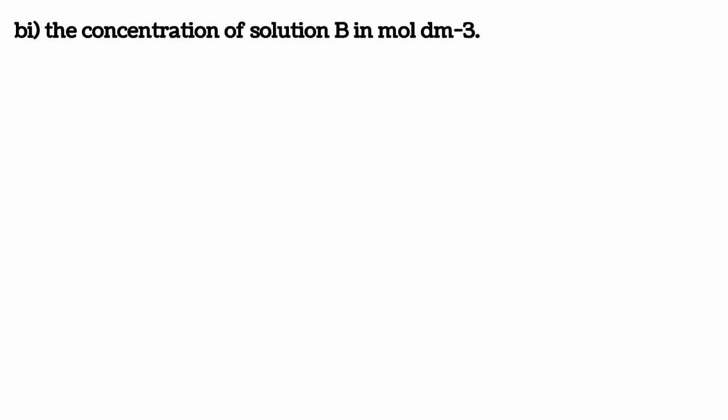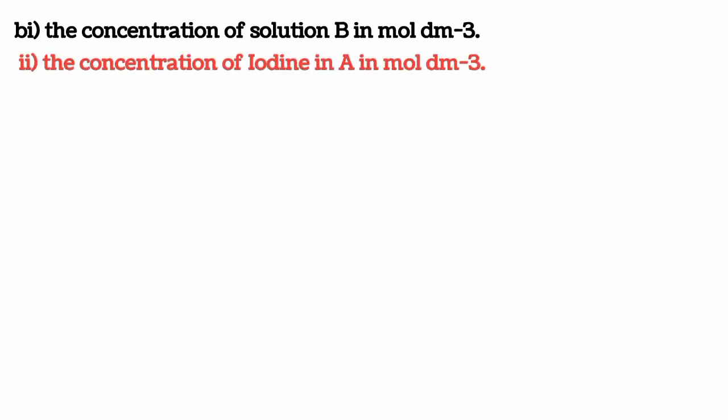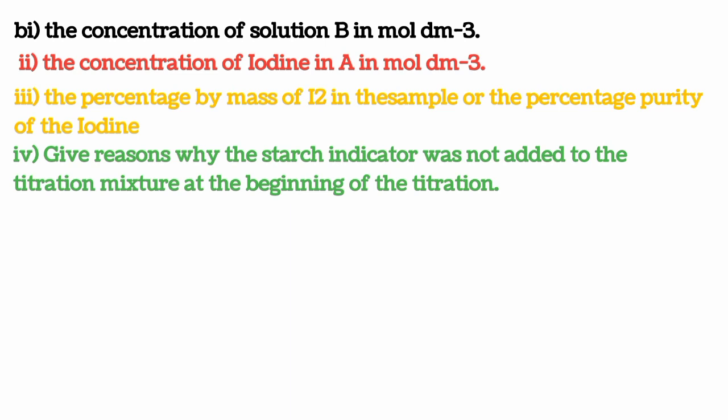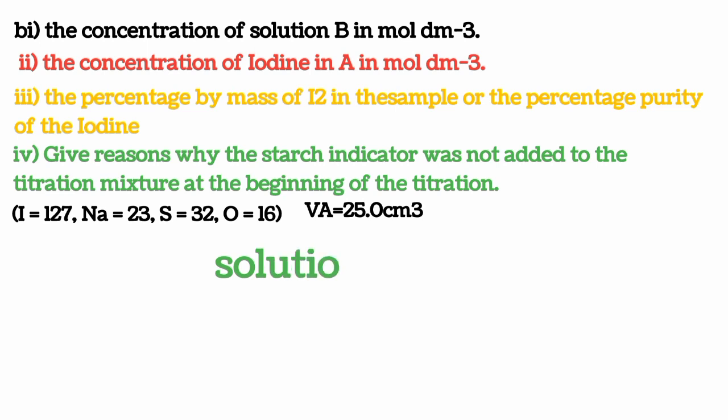The questions are: (1) Calculate the concentration of B in mol per dm³ — remember B is sodium thiosulfate. (2) Calculate the concentration of iodine in A in mol per dm³. (3) Calculate the concentration of iodine in the pipetted volume. (4) Calculate the percentage by mass of iodine in the sample, or the percentage purity of iodine. Also explain why the starch indicator was not added to the titration mixture at the beginning. Note: iodine is dissolved in potassium iodide.